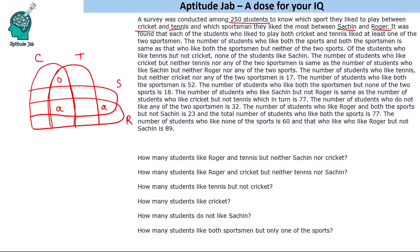Of the students who like tennis but not cricket, none of them like Sachin. Tennis but not cricket covers four regions outside cricket, and none of those people like Sachin. So that region — only tennis intersected with Sachin — is zero.